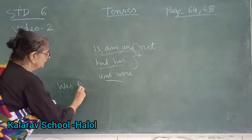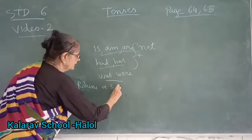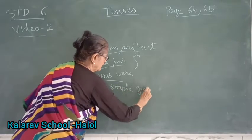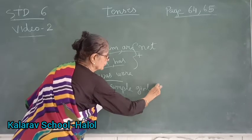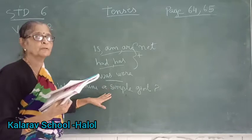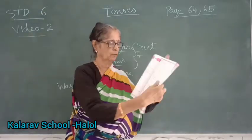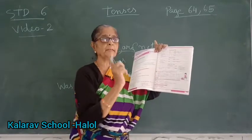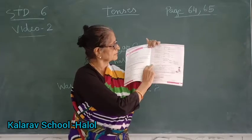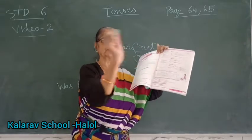To make it a question you have to bring 'was' to the front: 'Was Rohini a simple girl?' This is known as an interrogative sentence. I have given all the answers here, so you will also write in neat and clean handwriting. If space is less, begin writing from here, before the number.